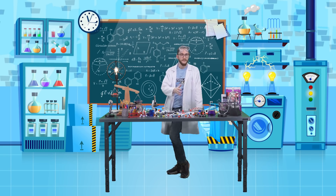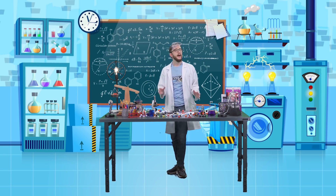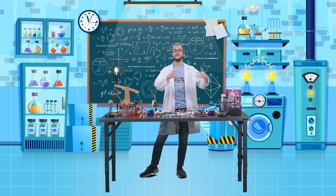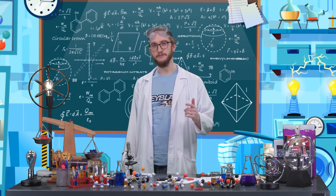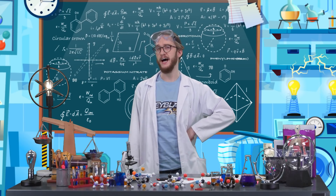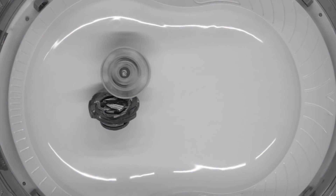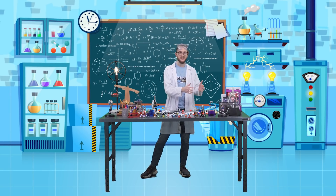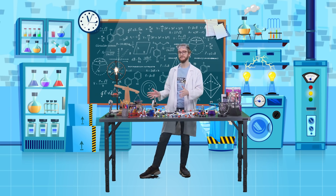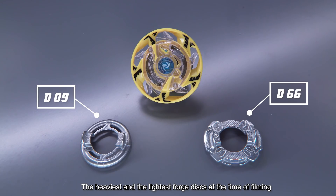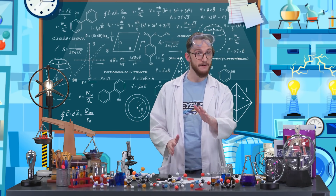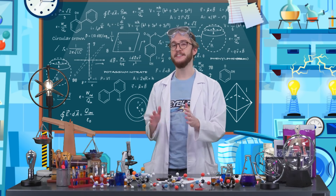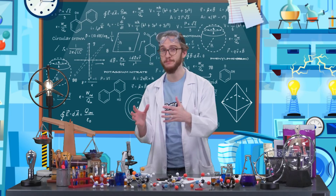Now that we're sure that velocity is related to the size of our collision, how do we prove that our Beyblade's mass is related to momentum and therefore the size of the collision? Let's launch our Garuda G3 into the stadium against our target Beyblade again. We can change the forged disc each time to make sure that our Beyblade has a different mass but everything else stays the same. We'll use forged disc D09 because it's the lightest and D66 because it's the heaviest, and each time we'll launch at the same speed. The lighter Beyblade should have less momentum and therefore transfer less energy into the target Beyblade when they crash, leading to a smaller collision.